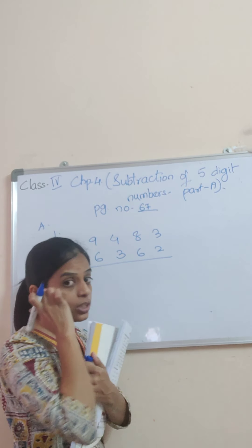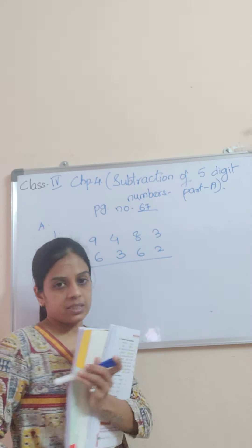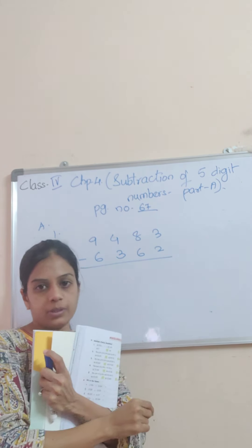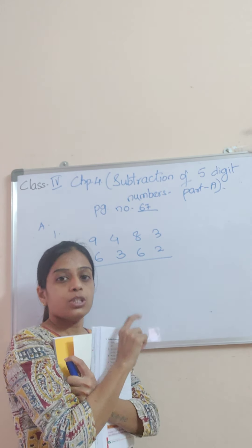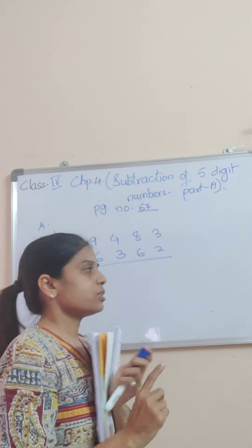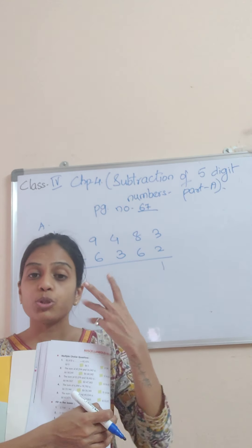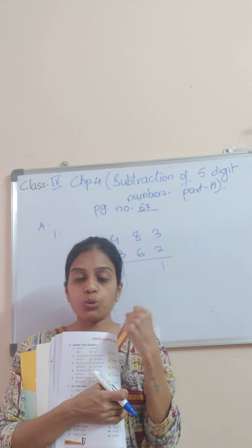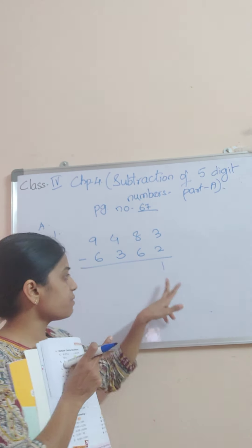Now students, as you already know, when you do subtraction, you always start with the numbers in the ones place, and you count from the below number to the upper number. We need to subtract 2 from 3. So after 2, the count is 3 — after 2 is 3, so that is 1. We open your fingers, right?